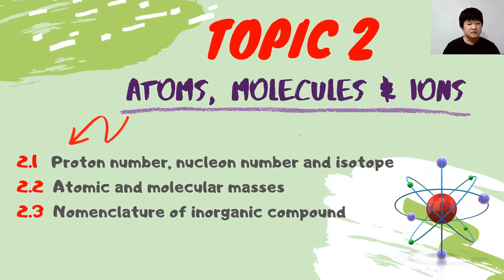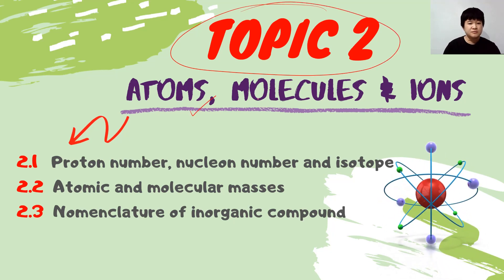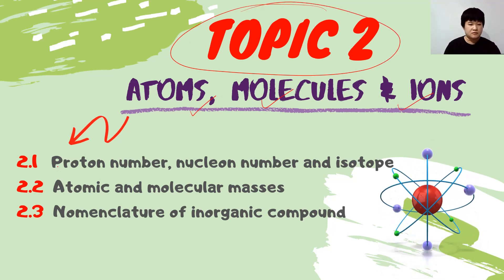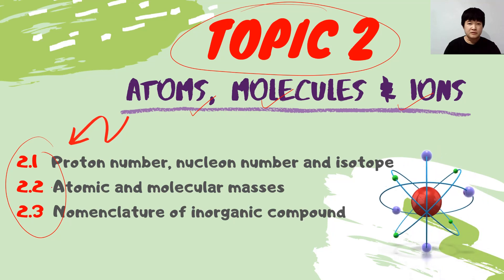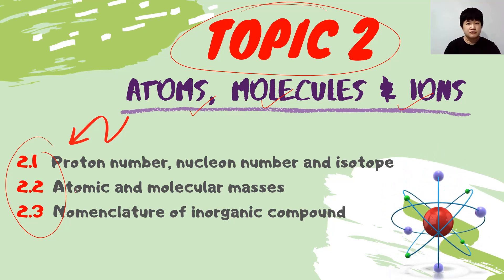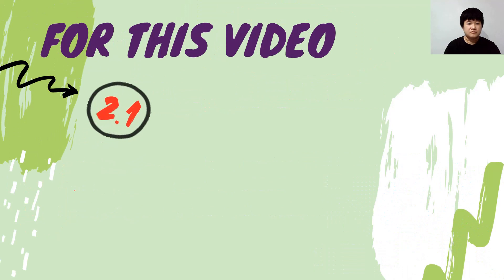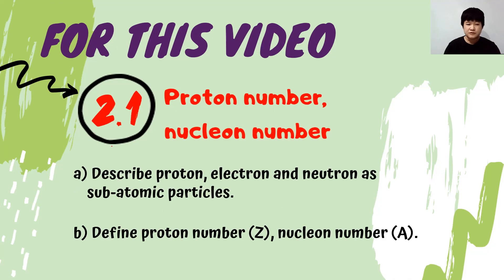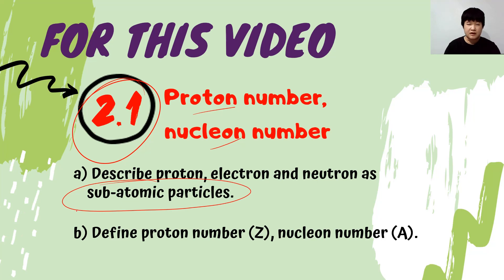Hello everyone, welcome back to my channel. We will start on topic 2, atoms, molecules and ions. We have 3 subtopics that we will cover in 4 different videos. For this video, we will be focusing on 2.1, proton number and nucleon number, where we will discuss what subatomic particles are and where they are located in an atom, and also we will look into proton number, nucleon number and so on.